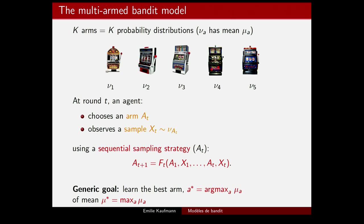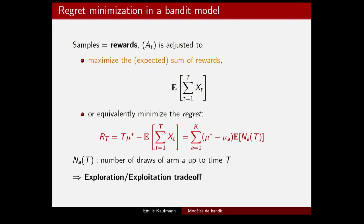This learning process can have constraints. One of the most considered problems is regret minimization, in which the samples collected are viewed as rewards. In such a case, it makes sense to have a sampling strategy adjusted to maximize the reward we get — in expectation, because the rewards are random. This is equivalent to minimizing the regret, defined as the difference between accumulated reward with an oracle knowing the best arm, giving t·mu* reward, minus the expected sum of reward with our actual strategy. We write this as the sum over arms of the gap between the best arm's mean and arm a's mean, multiplied by the expected number of times arm a has been drawn up to time t — the N_a(t) notation.